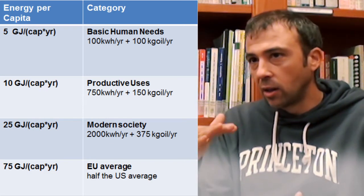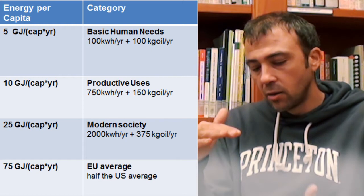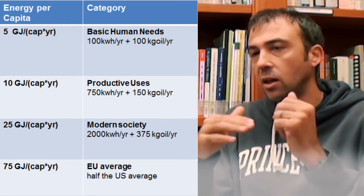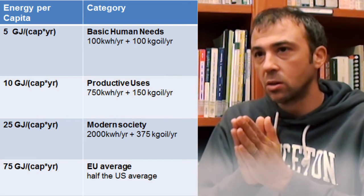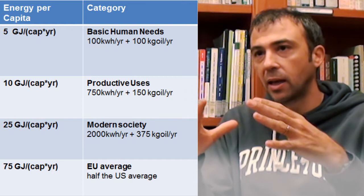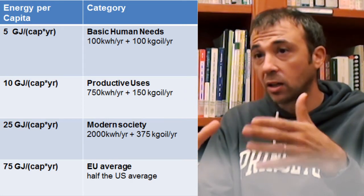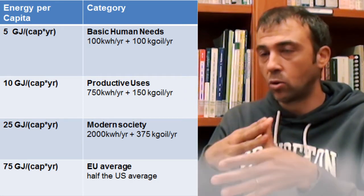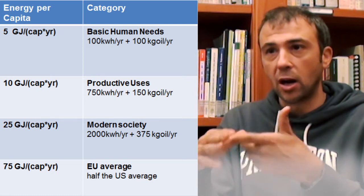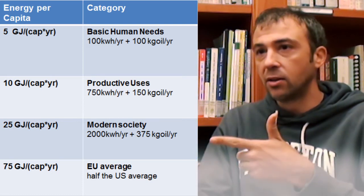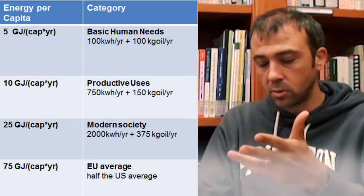The second level is twice as much — 10 Gigajoules per capita. This is what the United Nations refers to as productive uses: not just basic human needs, but the kind of energy you need to be productive in society — to carry out work, to be able to travel and sell your goods or buy and purchase other goods.